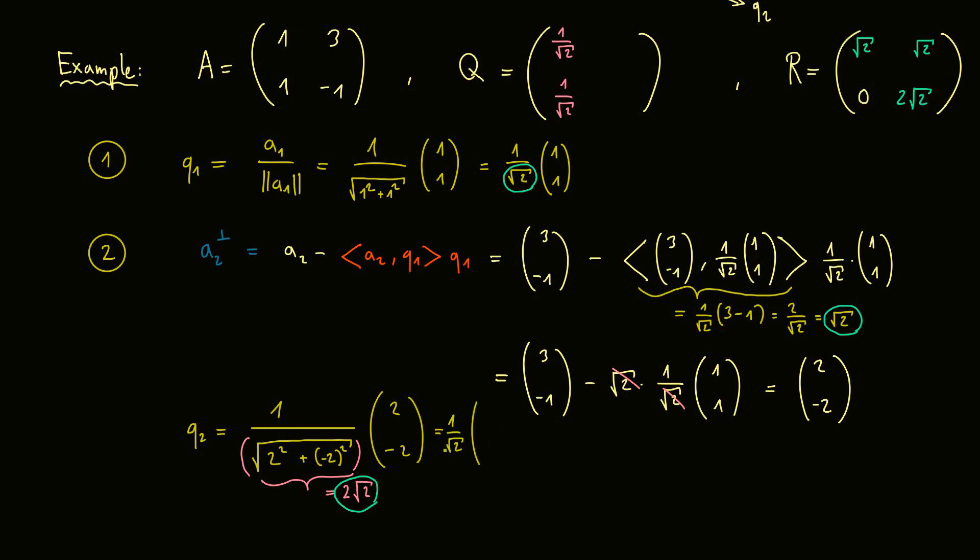Okay, and then also our Q2 looks very nice, it's 1 divided by the square root of 2, and (1, -1). And of course we can put that into the matrix as well. So 1 divided by the square root of 2, and here minus the same thing.